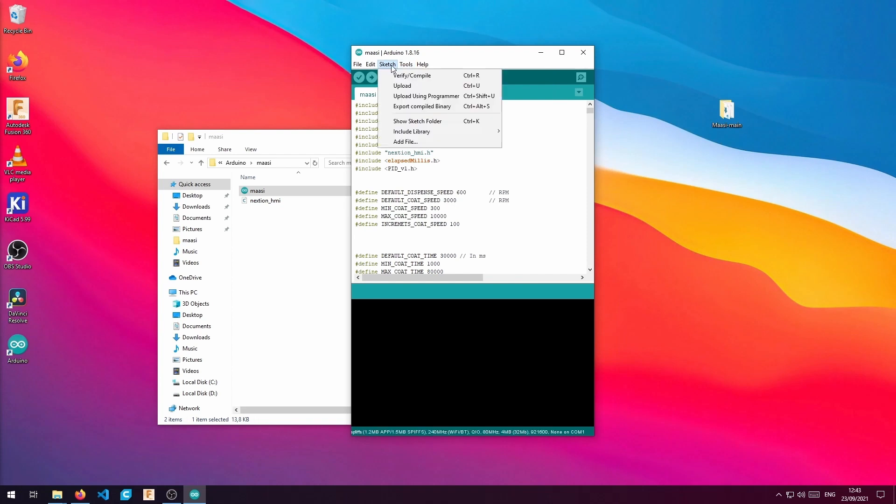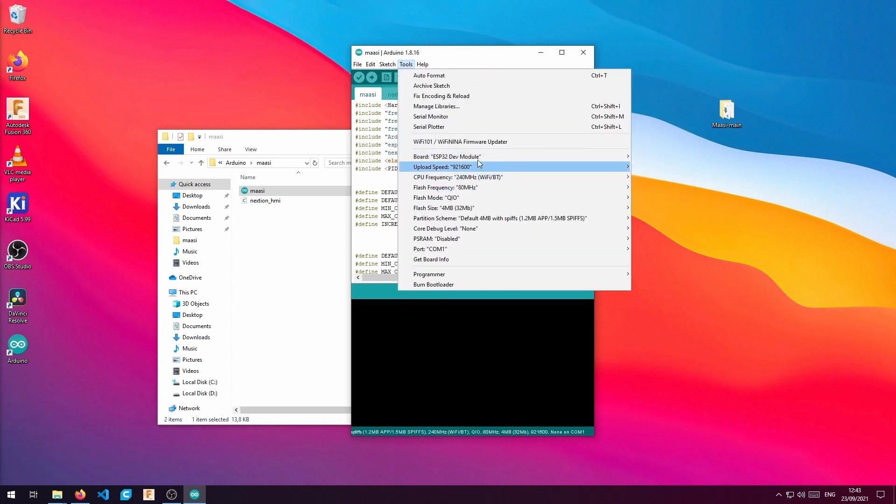We will select the dev module. After we plug our ESP32, we will select the COM port.